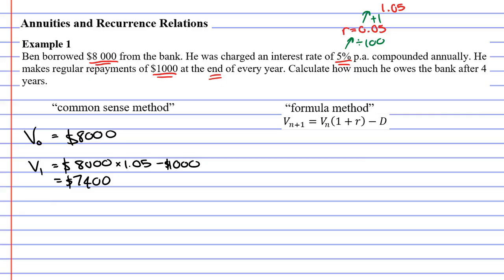All right, so that's V1. That's the end of the first year. What about V2, the end of the second year? Well, remember that this is a recurrence relation, which means that we need to use the previous result to make our calculations here. So we've got to take our $7,400, increase it by 5%, add 5% interest on, and then subtract our repayment of $1,000.